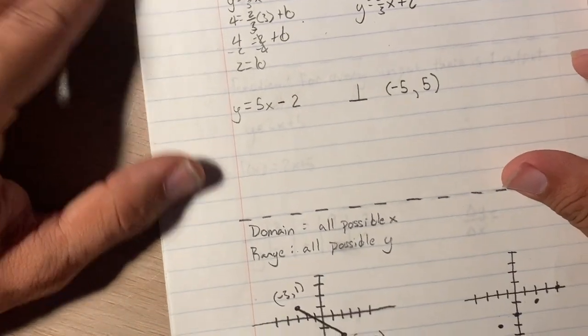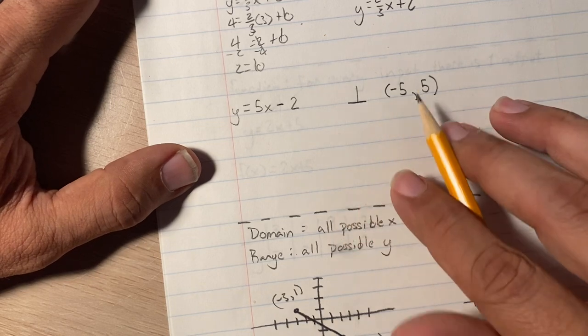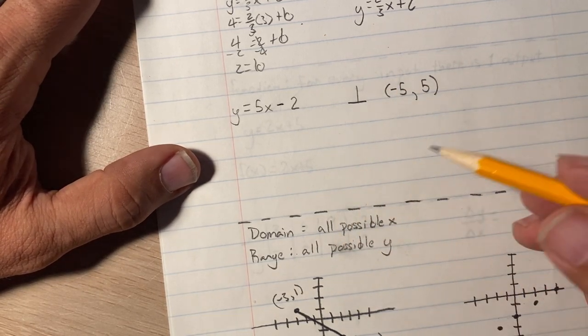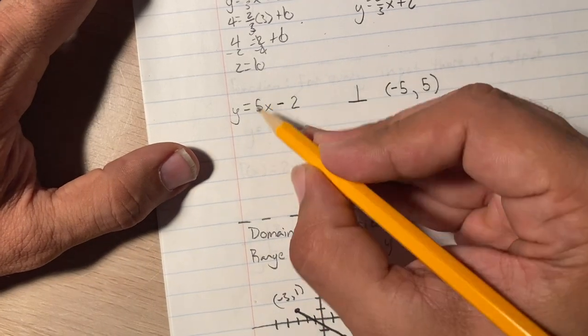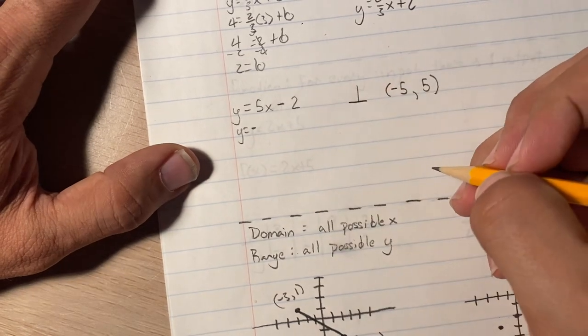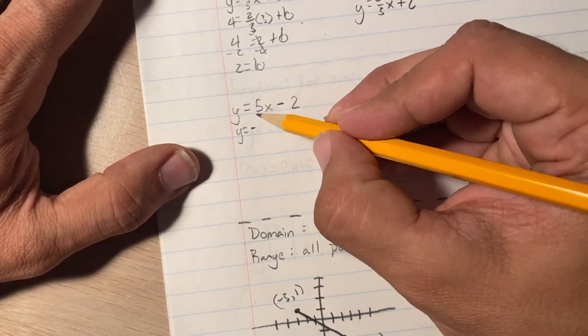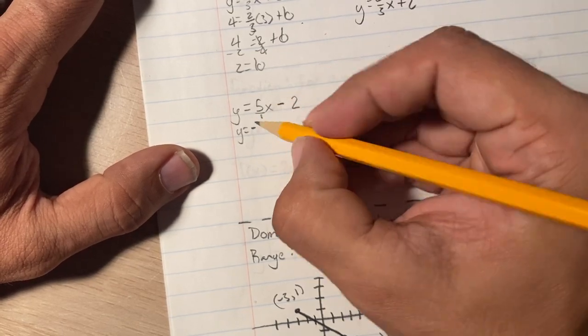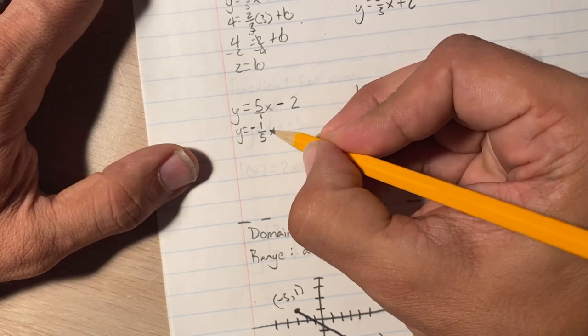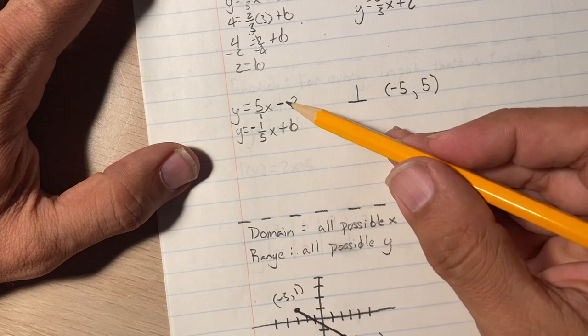Now we're going to do perpendicular. Now perpendicular, this is the shorthand for perpendicular, and it means that we're going to flip the fraction of the slope and we're going to do the opposite sign. So this is positive. So I know that the slope is going to be negative. Now, what are you going to flip? Well, you put a 1 underneath it and then you flip it and it'll become 1 over 5, x plus b. See how I still wrote plus b, even though this is a minus?